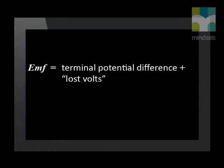From this, we can derive the equation: EMF is equal to terminal potential difference plus lost volts. EMF equals current times external resistance plus current times internal resistance. Now let's look at how we would use this equation in a calculation.